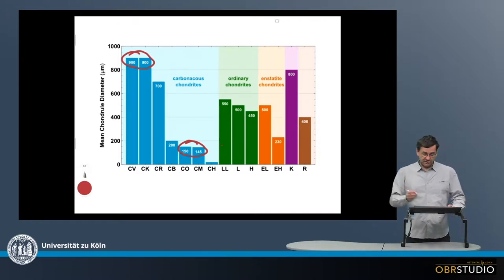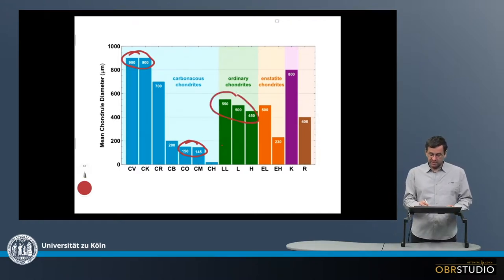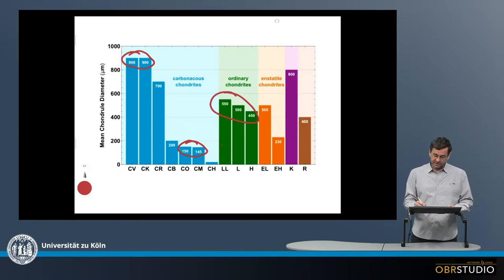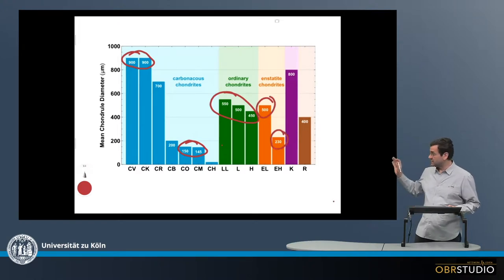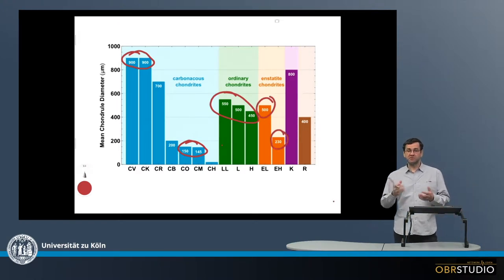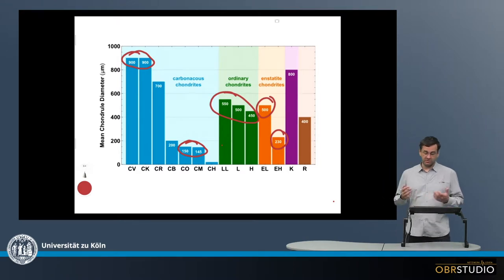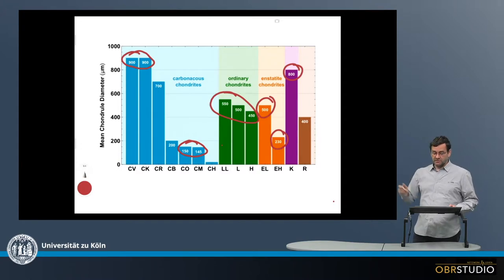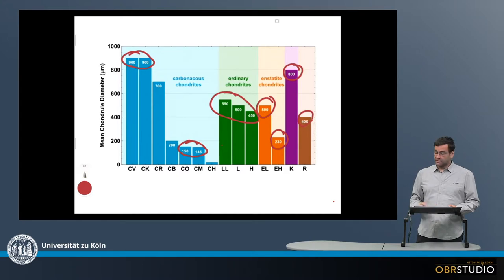Looking at ordinary chondrites, they have about similar mean chondrule sizes. Whereas in the enstatite chondrites, there's quite a factor of two between EL and H chondrites, so this also requires some kind of explanation. The Kakangari chondrites are currently not well characterized — they are quite large, like CV or CK, but again a bit smaller.